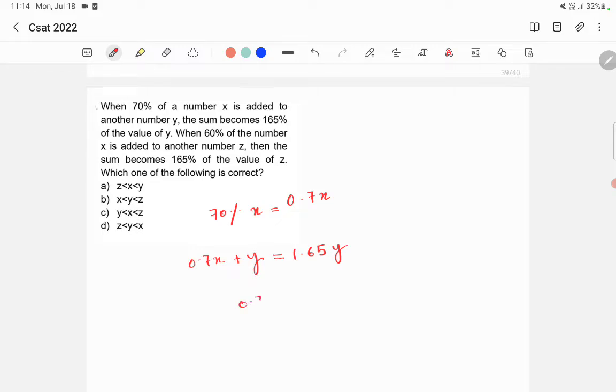Now I will rearrange this, then I will get 0.7x is equal to 0.65y, because y will come here. So 1.65y minus 1y becomes 0.65y. So this is the first equation you got.